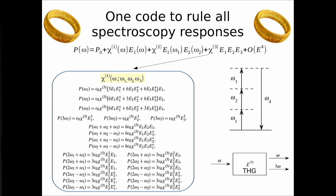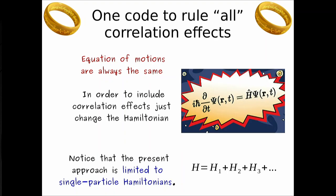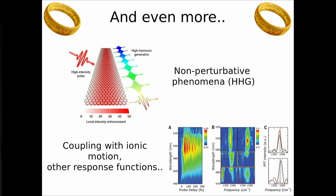A further advantage is that you have only one equation of motion — the equation is always the same and all correlation effects enter through the Hamiltonian. Choosing different Hamiltonians includes different correlation effects. The real-time approach also allows access to non-perturbative phenomena like high-harmonic generation, where a laser at a given frequency generates responses at 14 or 20 times that frequency. In other codes you can also couple with atomic motion, as in Octopus.